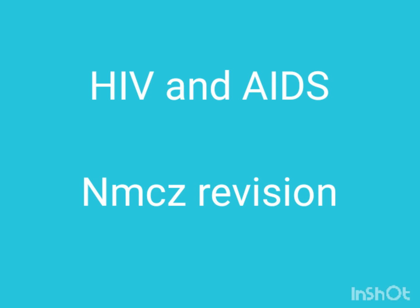Objective number one: define HIV and AIDS. Objective number two: state the five ways through which HIV infection can be transmitted. Objective number three: state the five complications of HIV and AIDS. Objective number four: explain the five preventive measures of HIV and AIDS. Objective number five: describe the management of HIV and AIDS.